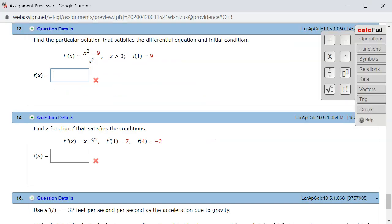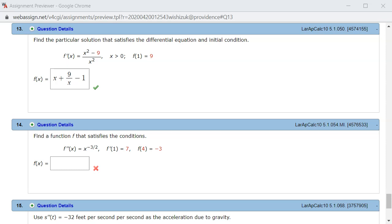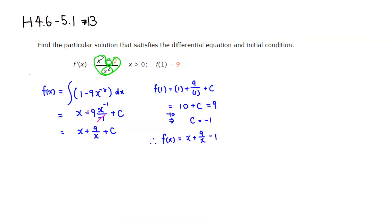So we got x plus 9 over x minus 1. Let's check the answer. I came back, and it looks like we got this one correctly. That's it. I hope that this was clear.